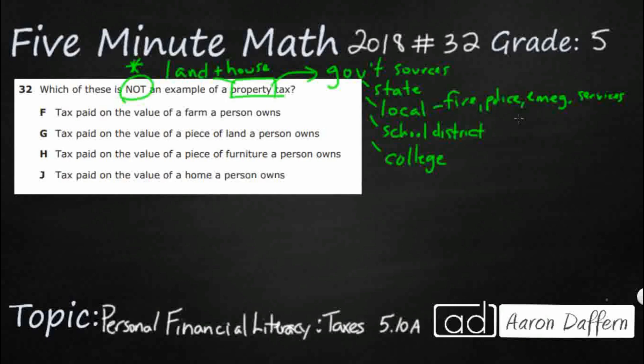Let's see what F says. F says the tax paid on the value of a farm. Well, a farm actually is a good combination of both. It definitely has land, and there typically is a house on that land, which means that is a property tax, and we don't want it, because we're looking for the answer that is NOT an example of a property tax. So F is incorrect.